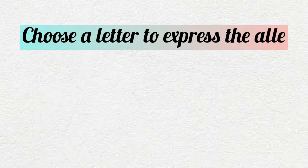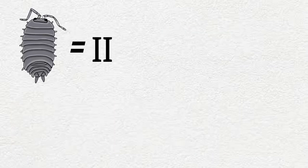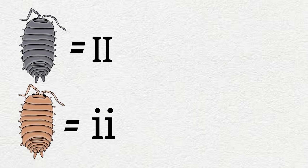Now the first thing you want to do is to select a letter to express these alleles. The letter you choose is not important so long as the dominant allele is a capital and the recessive allele is a lowercase. Let's choose the letter I for this example. Common grey is two capital I's and orange is two lowercase i's.